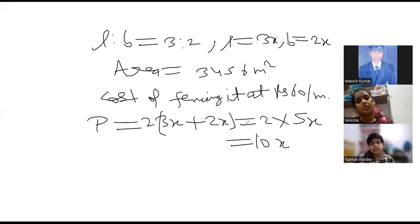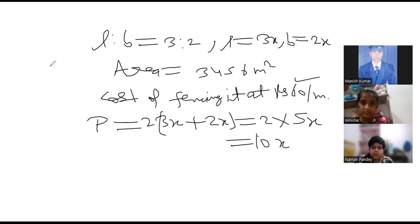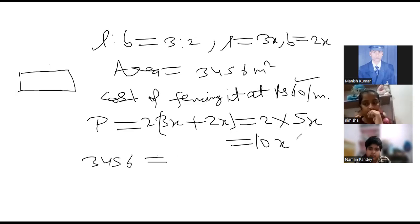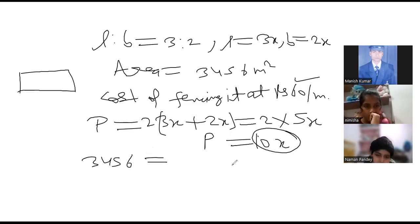Can you repeat the question again sir? All the things that have been given in the question are written on the board only. L is to B is 3 is to 2. Area has been given as 3456 meters square. Now cost of fencing we have to find out and the cost per meter is rupees 60. So suppose there is a rectangle here, then we can take area as 3456 meters square. Then 3x into 2x, which is 6x square, equals 3456.